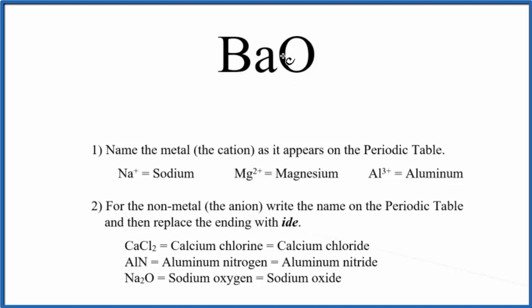Specifically, this is called a binary ionic compound because we have two different elements. So for a binary ionic compound, we use these rules.